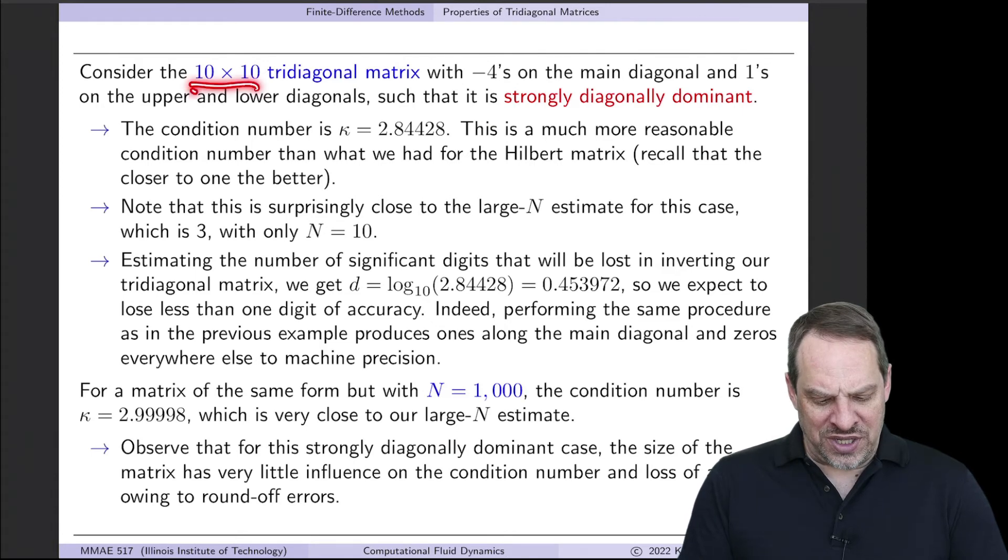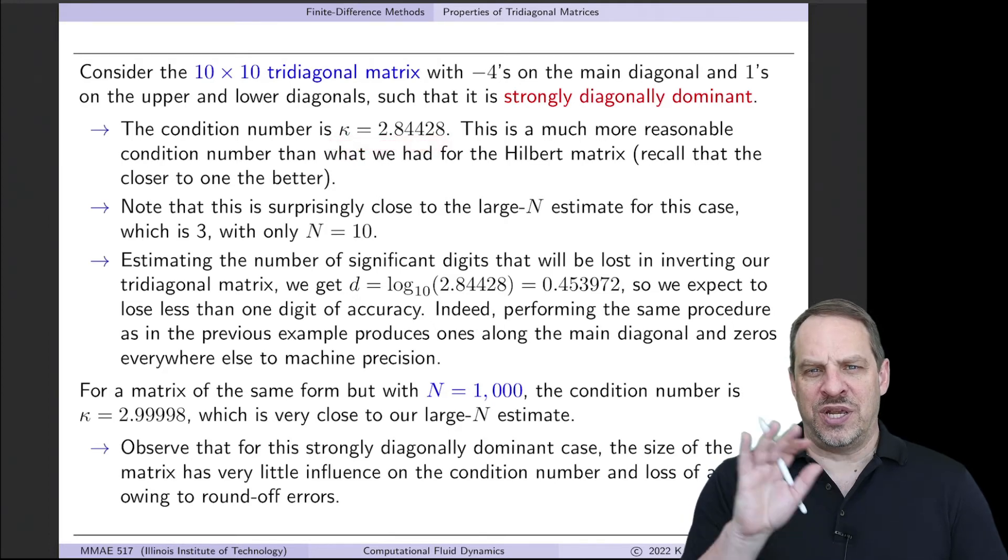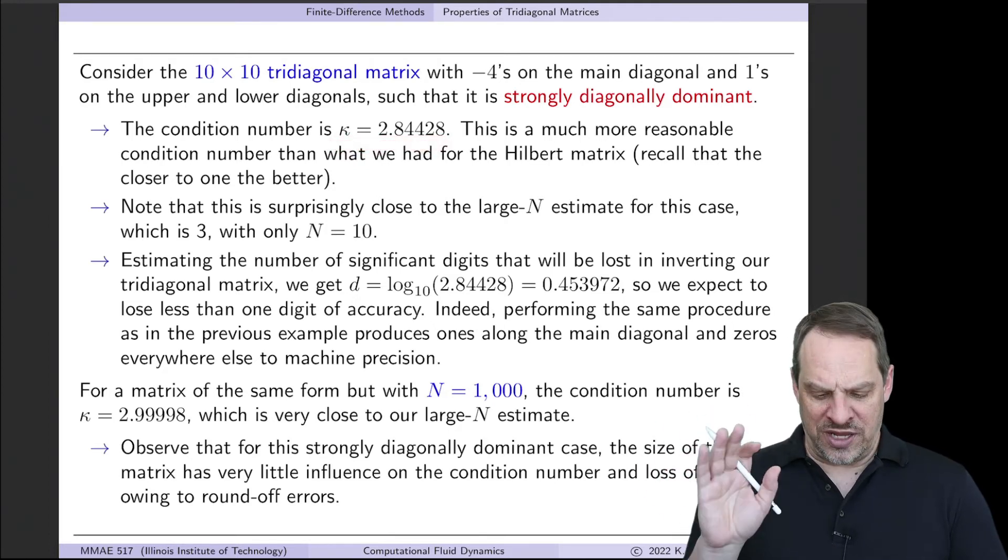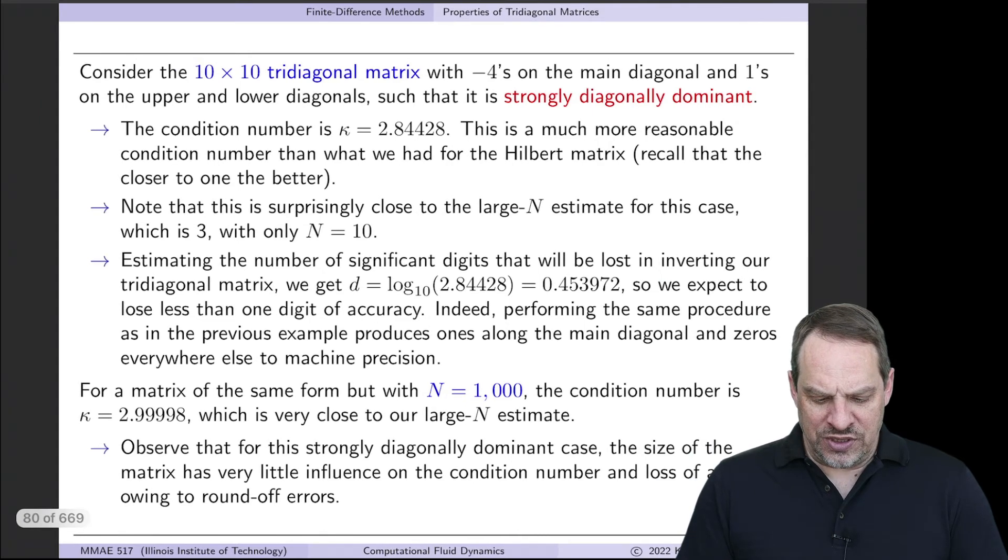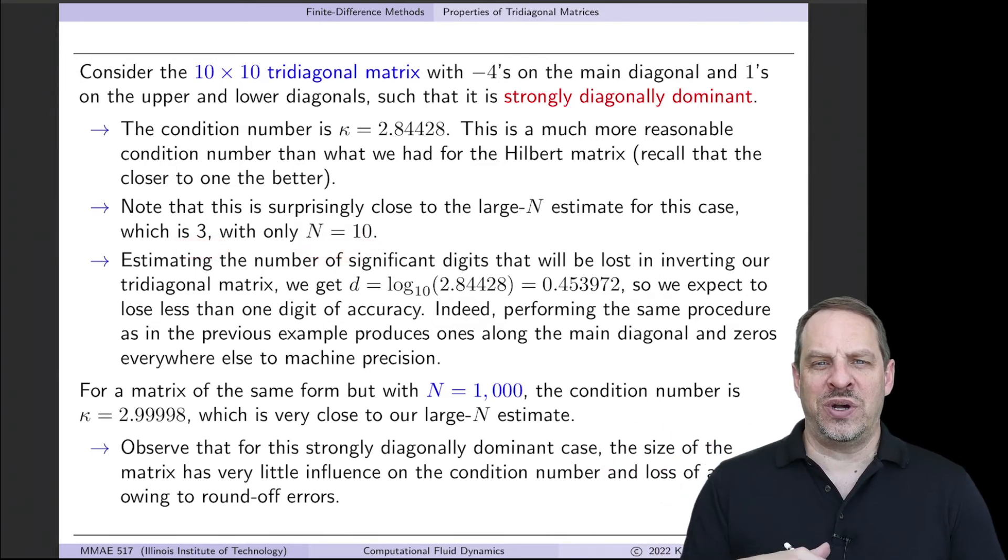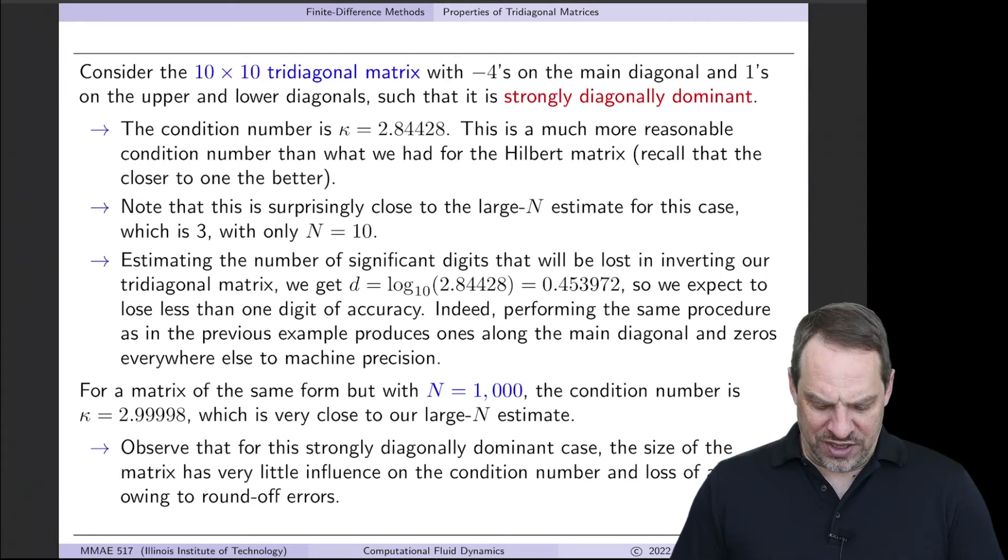So let's begin by looking at the case where we have -4s on the main diagonal. So this is the strictly diagonally dominant case, which is well-conditioned. First, we'll look at a 10 by 10 tridiagonal matrix, so a small version. The condition number is 2.84. That's obtained using, for example, Mathematica or MATLAB or Python. And you can see that that's a rather low value. It's close to 1. And in fact, it's very close to 3, even though the size is only 10. So our large N estimate works actually quite well, even in the 10 by 10 case.